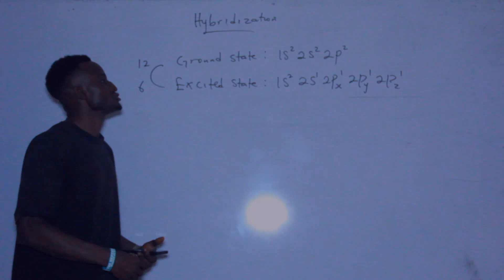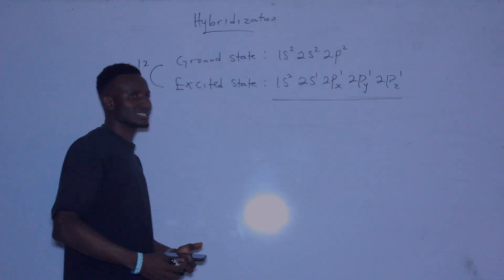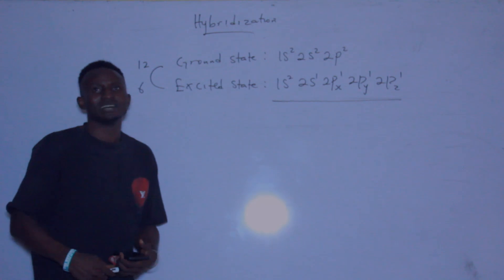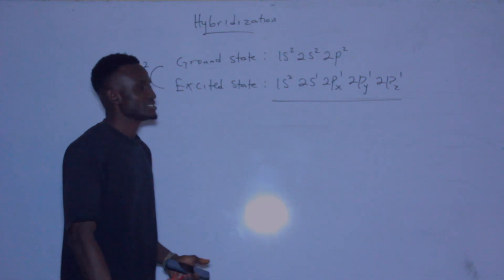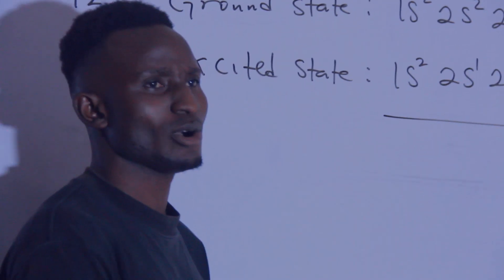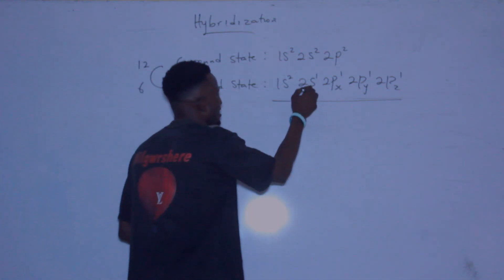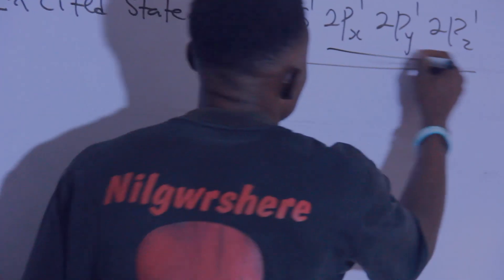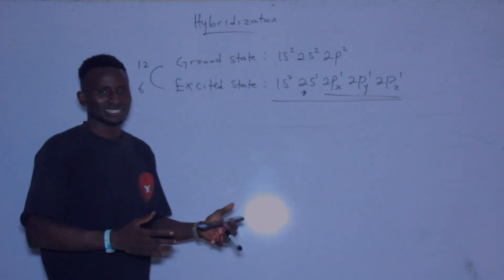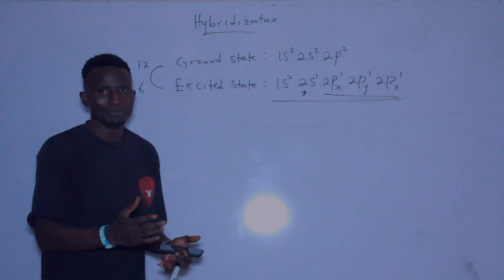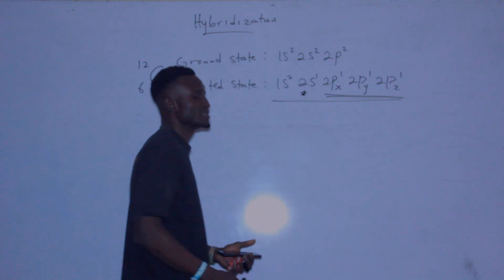We are going to use the electronic configuration of carbon in its excited state to explain the term called hybridization. Hybridization is the mixing or blending of the 2s orbital with the 2p orbitals.